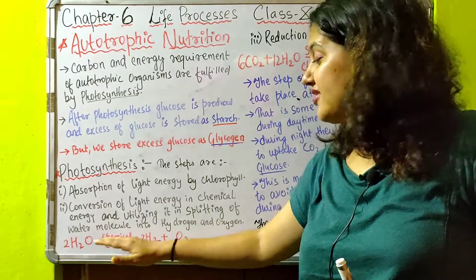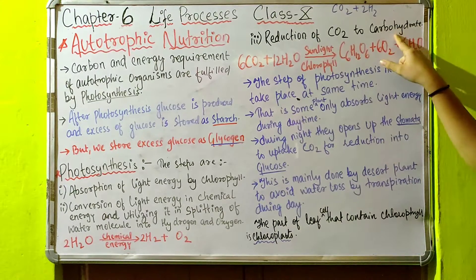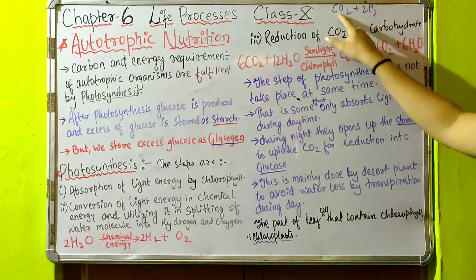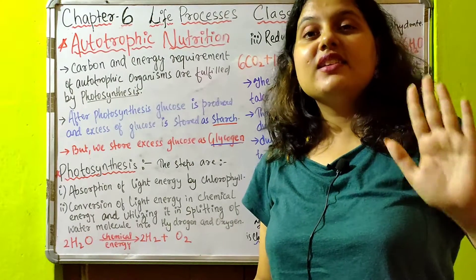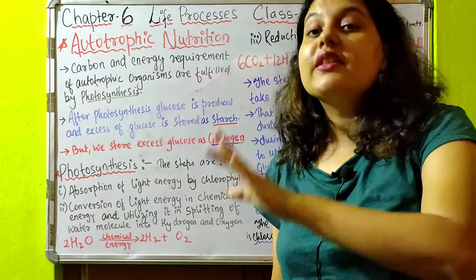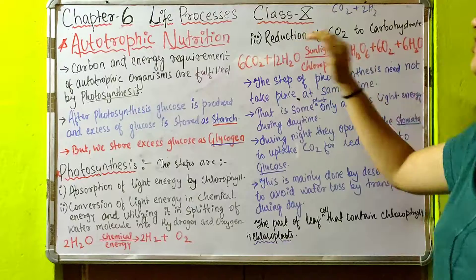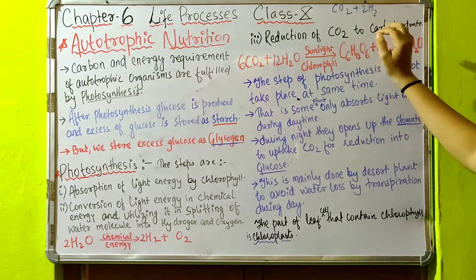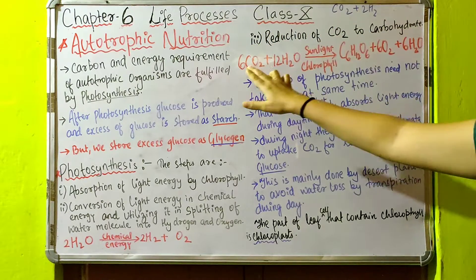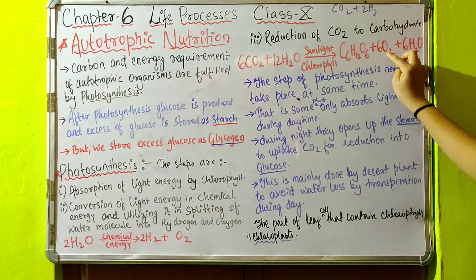In the third step, water molecules in the presence of chemical energy are split into hydrogen and oxygen, and then there is the reduction of CO2 to carbohydrate. CO2 is added with the hydrogen — whenever hydrogen is added to a molecule, that molecule is reduced, and the reaction is known as a reduction reaction. The overall equation of photosynthesis is: 6CO2 + 12H2O in the presence of sunlight and chlorophyll gives glucose + oxygen + water.